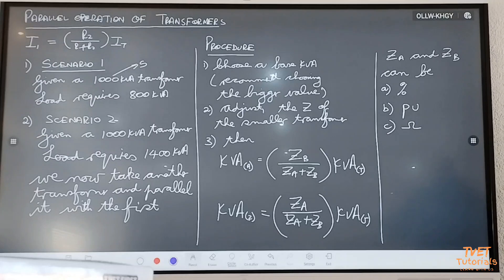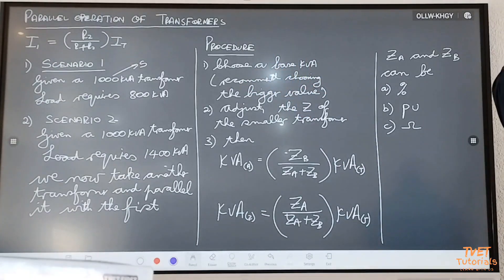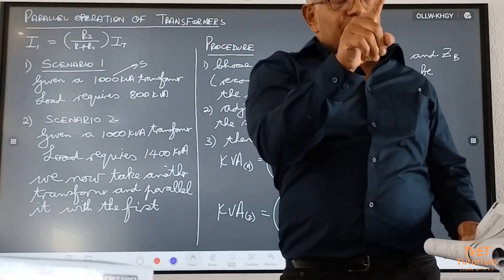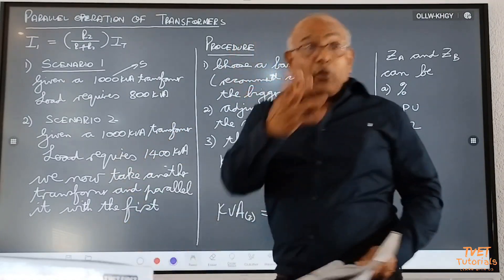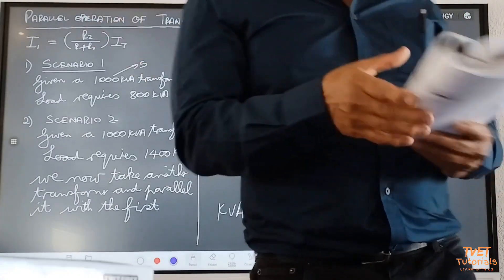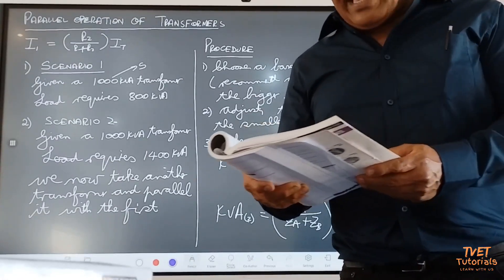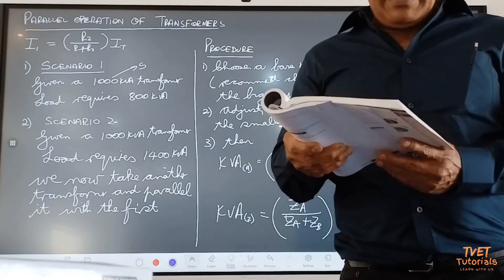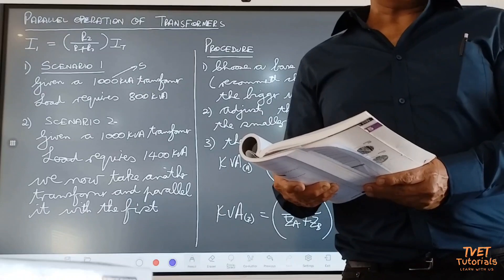If you choose the smaller value, it's just that I don't like working with fractions — but it doesn't matter at all. You can even choose a different value. The disadvantage of choosing a different value is that you have to adjust both transformer A's and transformer B's impedance — you're wasting time. But you can choose any one. The formula is: new Z equals original Z multiplied by base kVA divided by the kVA of the transformer.